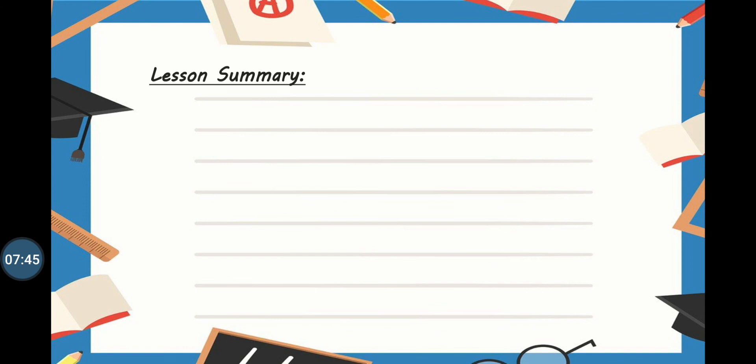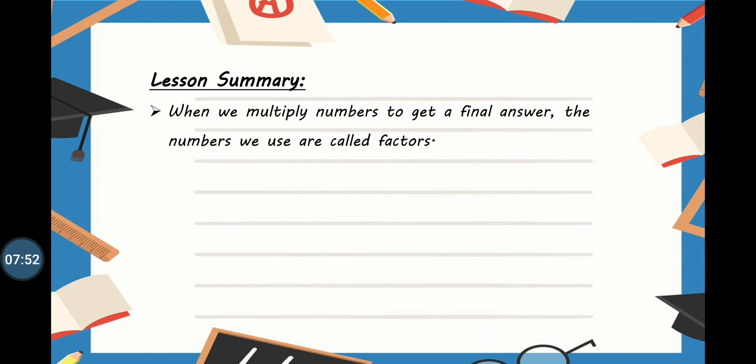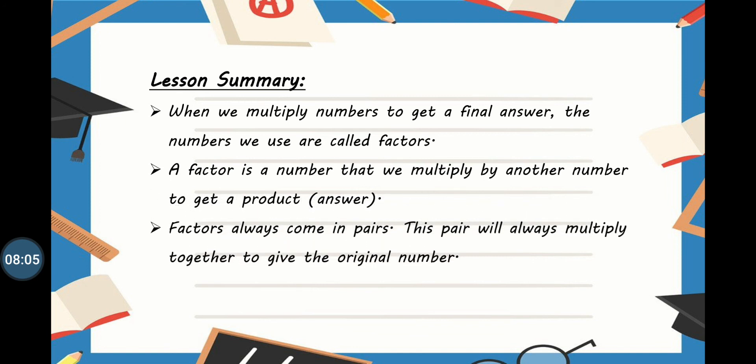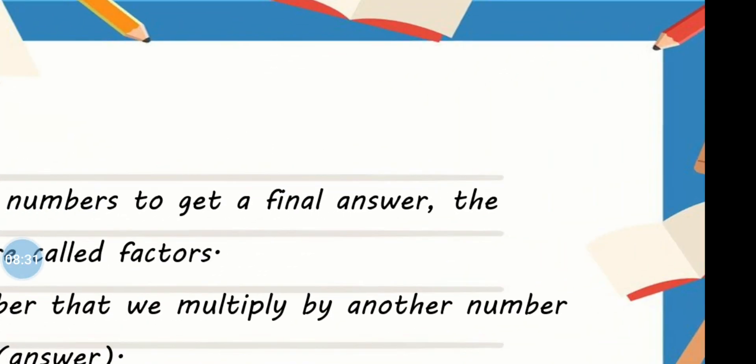Let's look at the summary of our lesson - what did we learn? We have learned that when we multiply numbers to get a final answer, the numbers are called factors. A factor is a number that we multiply by another number to get a product, and product is the answer. Factors always come in pairs. This pair will always multiply together to give the original number, like 2 times 4 equals 8, so 2 and 4 is one pair. An array is a collection of objects in equal groups of equal rows. I hope it's clear to all of you now.